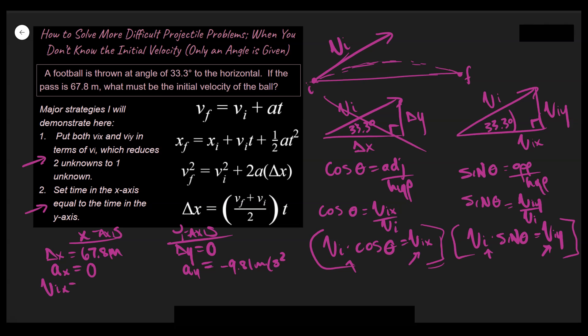Next up, our v_initial in the x. Our v_initial in the x, we don't know, but we did solve for what that is in terms of v_initial. So we're going to say v_initial times the cosine of theta. And similarly, we can say v_initial in the y is v_initial times the sine of theta.